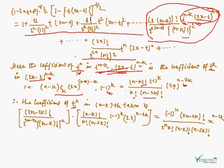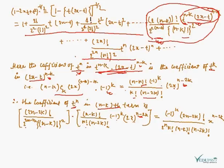The coefficient of t to the power n in the (n minus k)-th term is (2n−2k)! / (2^(2n−2k) · ((n−k)!)^2) times (n−k)! / (k! · (n−2k)!) · (−1)^k · (2x)^(n−2k). Thus the product of the coefficients gives (−1)^k · (2n−2k)! / (2^n · k! · (n−k)! · (n−2k)!) times x to the power (n minus 2k).